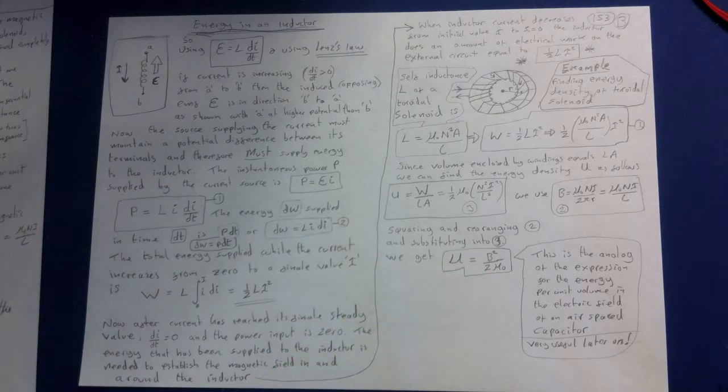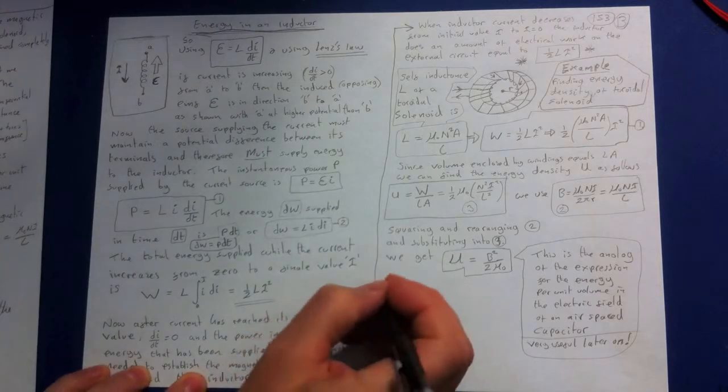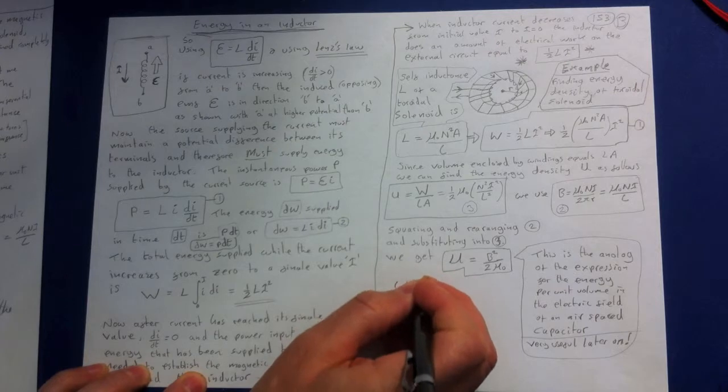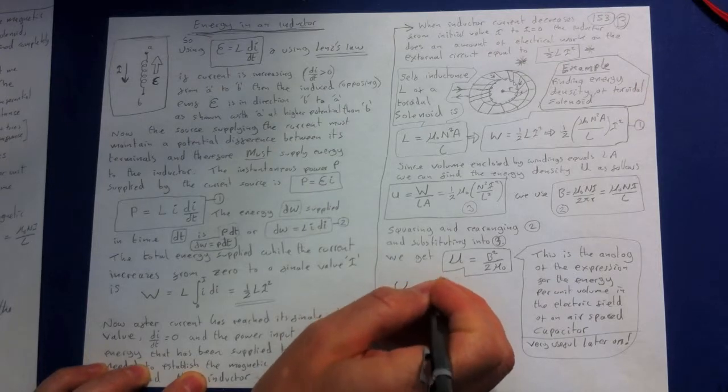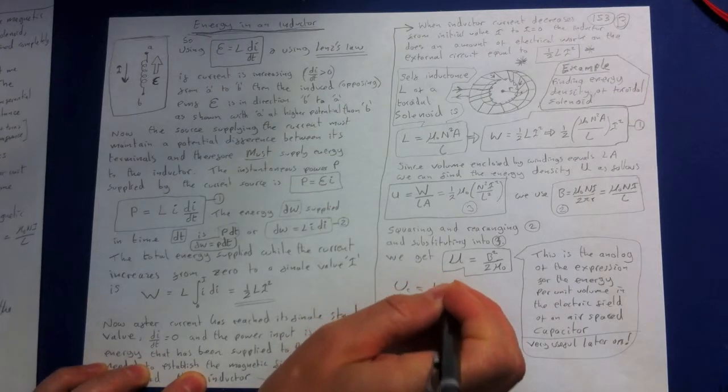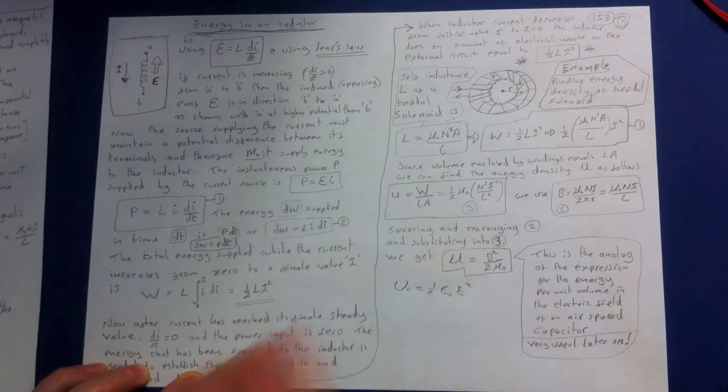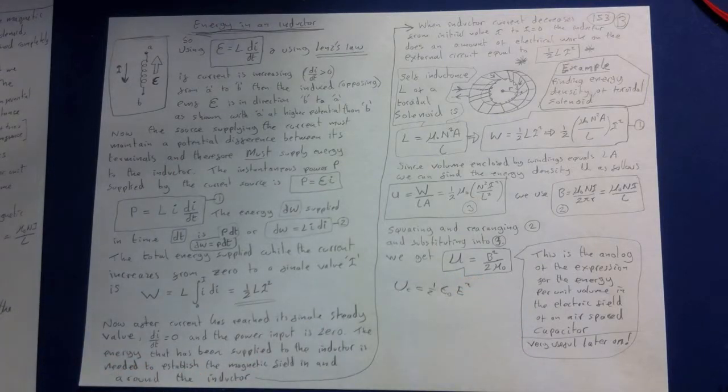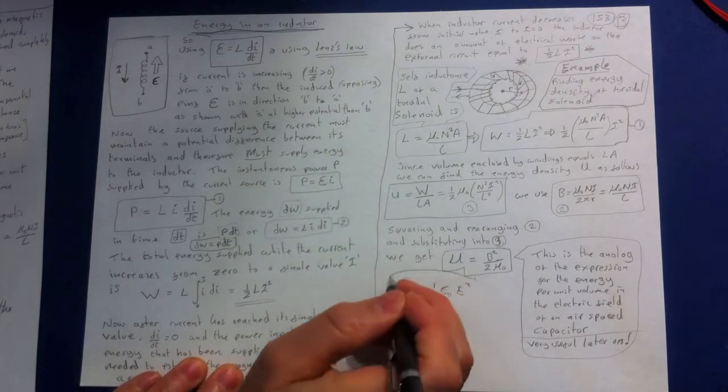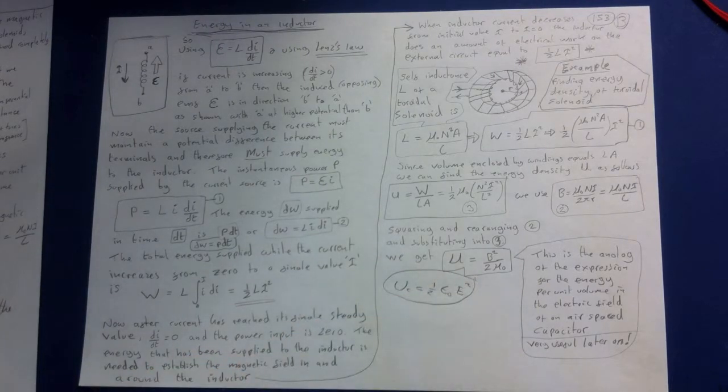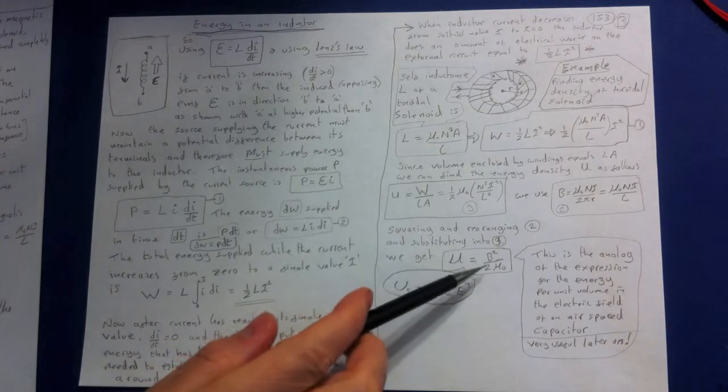This is the analogue of the expression for the energy per unit volume in the electric field of an air capacitor, which was half epsilon naught E squared if you remember that. The energy per unit volume in the electric field of an air capacitor was given as, let's call it UC, a half epsilon naught and the field, electric field squared, the magnitude of electric field squared. So that there is for the capacitor and this now is for the energy per unit volume in an inductor.